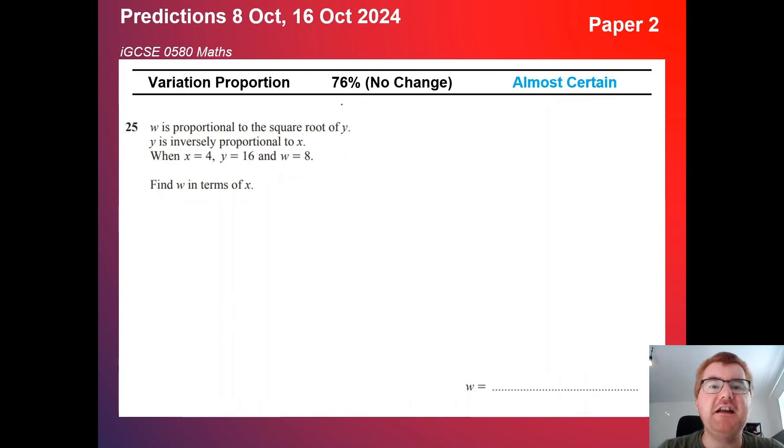On to variation and proportion, no change at 76%, so we're still at almost certain. What they have tried to do is they've tried to make these questions a bit harder than in the past. And this is very typical. Question 25, right towards the end of the paper, where they say W is proportional in some way to Y, and then Y is proportional in some way to another variable, and then we need to work out that variable in terms of the last one. This is something they've been adding into the papers over the last couple of years. You want to get the top marks, those A and A stars. This is something you should revise in great depth.